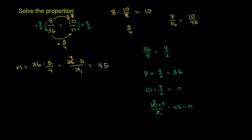Sometimes when you see a proportion like this, people say you can cross multiply. And you can — I'll teach you how to do that, and it's sometimes a quick way to do it. But I don't like teaching it first when looking at proportions, because it's really just something mechanical and you don't really understand what you're doing. It comes out of a little bit of algebra, which I'll show as well. So we have 8 over 36 is equal to 10 over n.